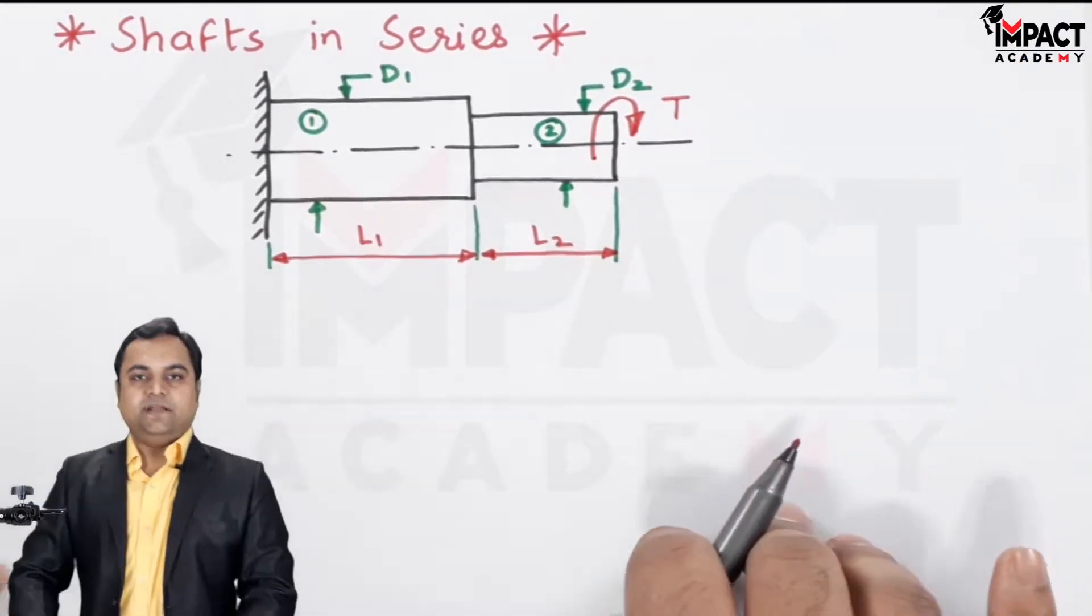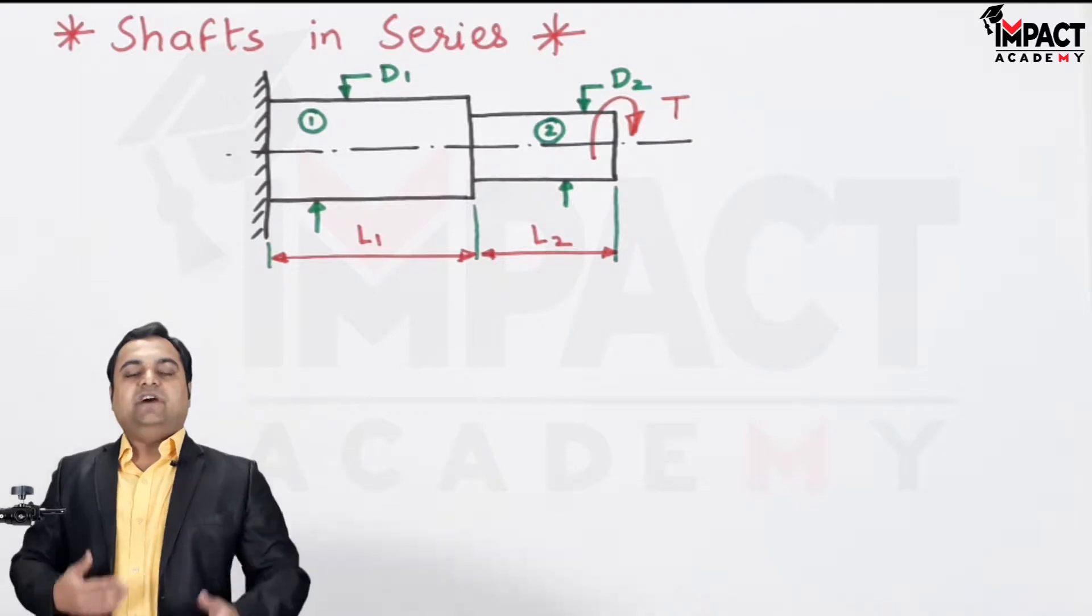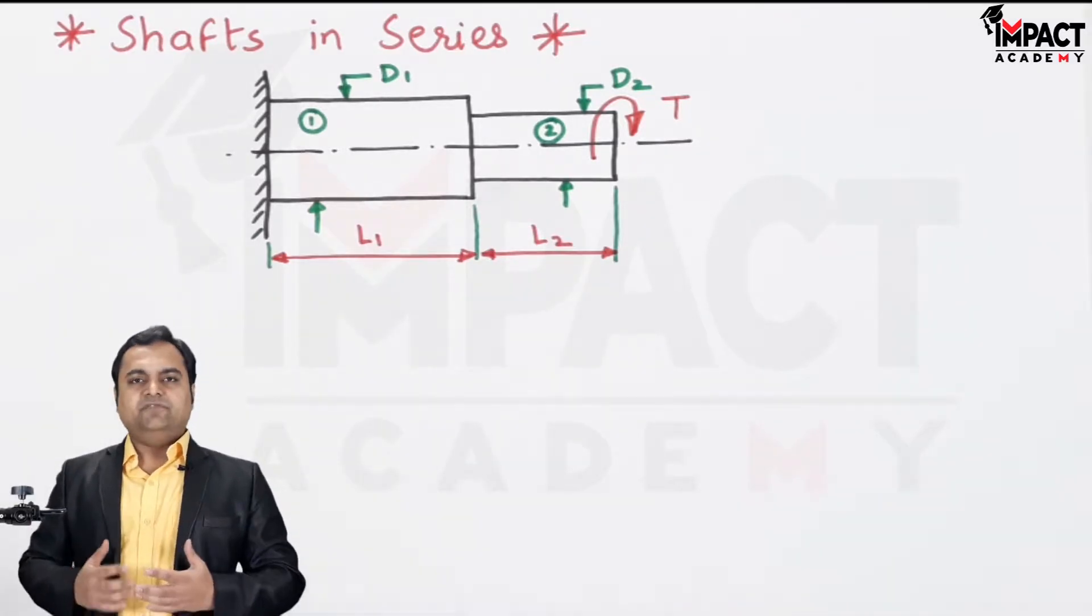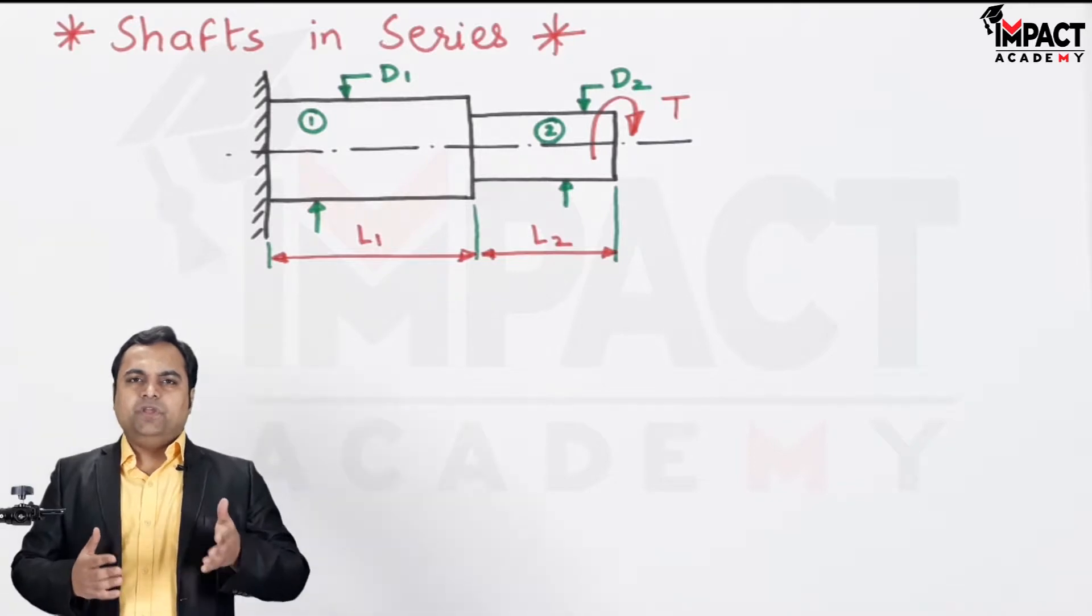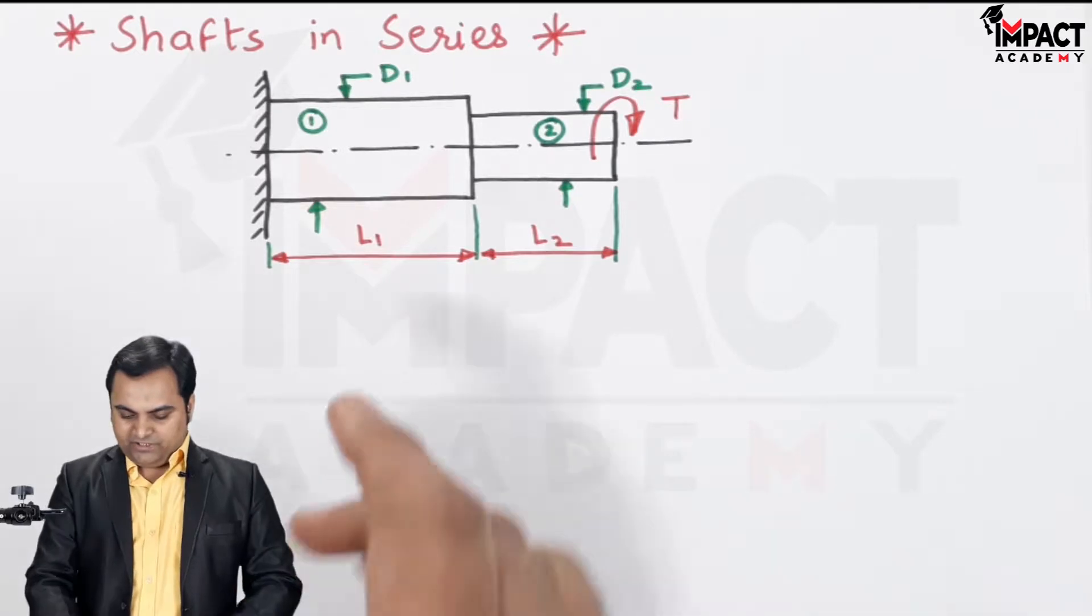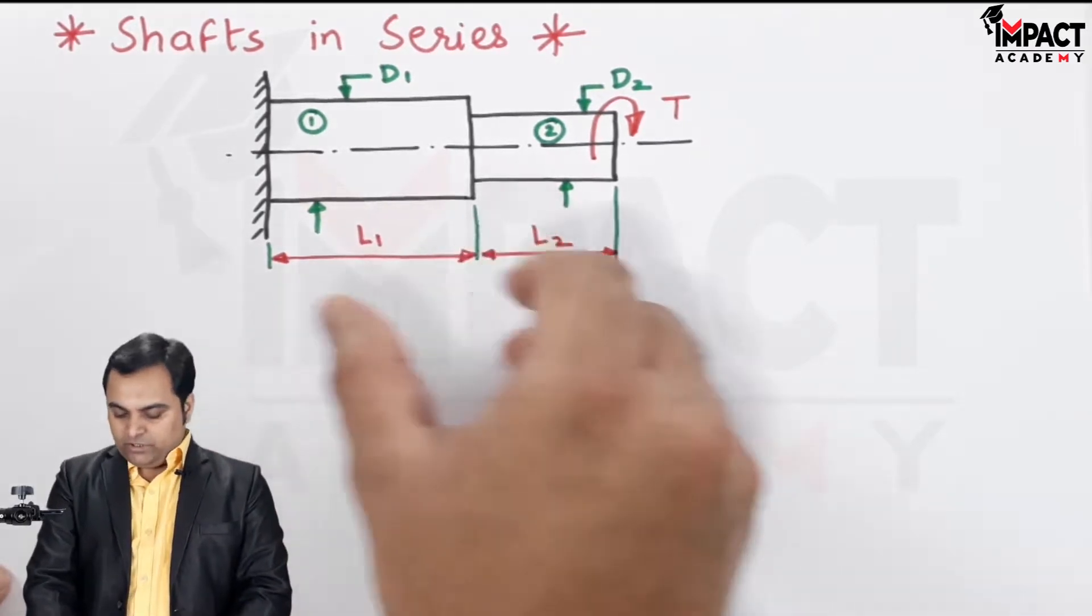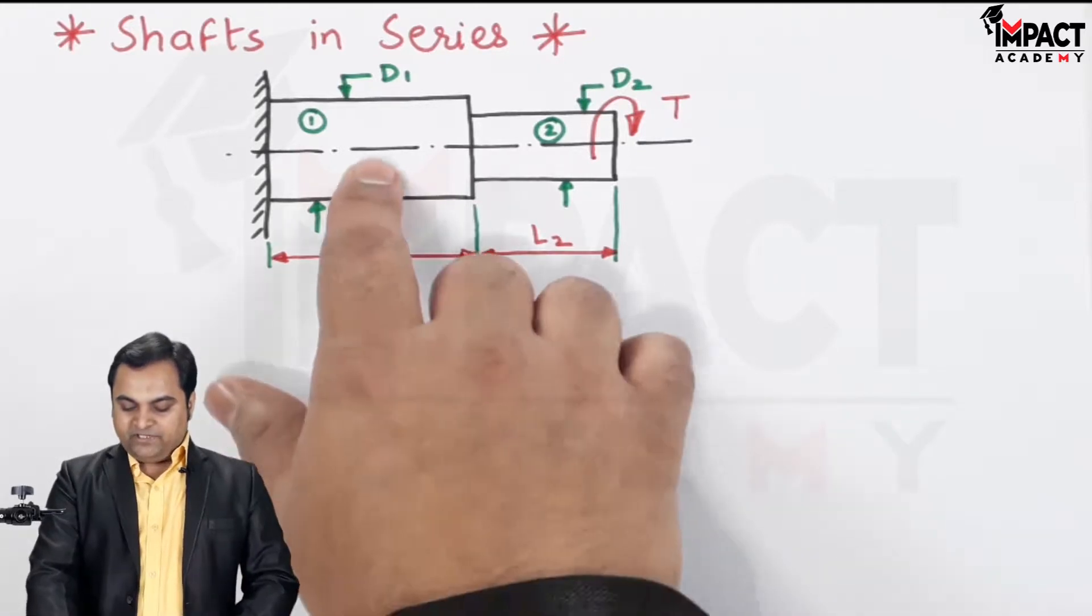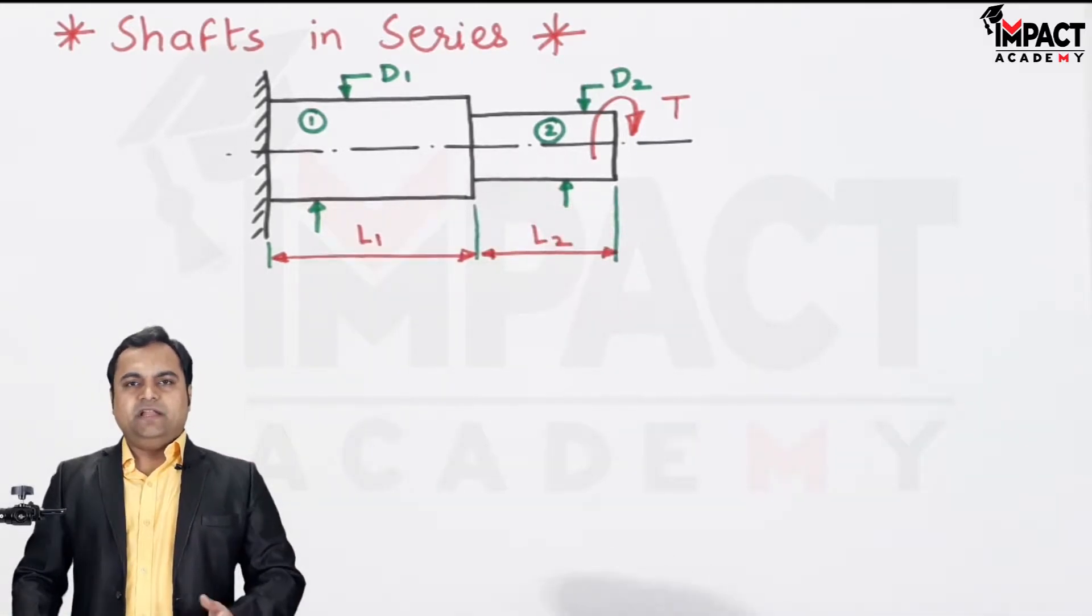Now here is the diagram for shafts in series. Shafts in series means it is a shaft which is made up of two or three stepped shafts that are combined. For example, here there is a shaft having length L1 which is connected to another shaft having length L2. The diameters are different.